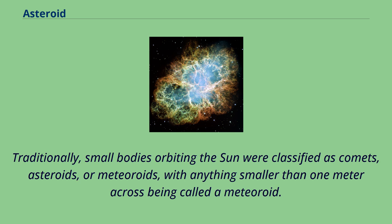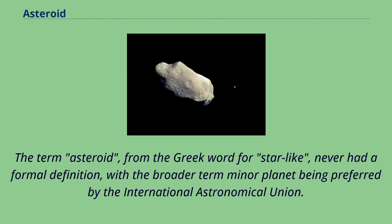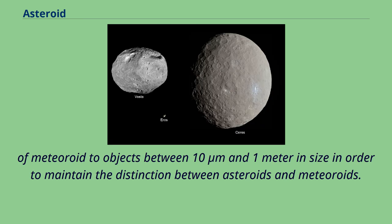Traditionally, small bodies orbiting the sun were classified as comets, asteroids, or meteoroids, with anything smaller than one meter across being called a meteoroid. Beach and Steele's 1995 paper proposed a meteoroid definition including size limits. The term asteroid, from the Greek word for star-like, never had a formal definition, with the broader term minor planet being preferred by the International Astronomical Union. However, following the discovery of asteroids below 10 meters in size, Rubin and Grossman's 2010 paper revised the previous definition of meteoroid to objects between 10 micrometers and 1 meter in size, in order to maintain the distinction between asteroids and meteoroids.